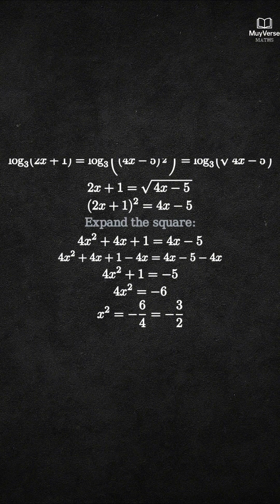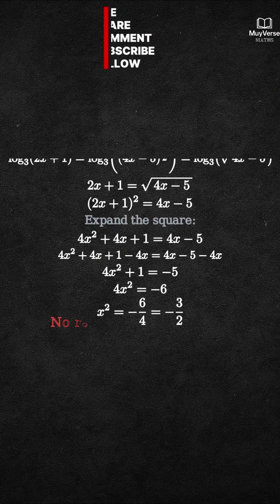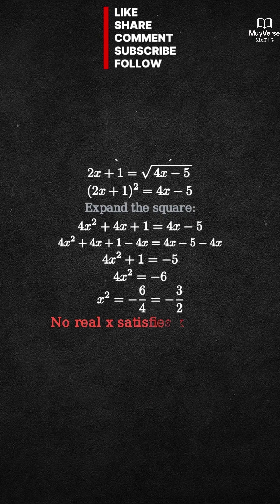Step 5: Interpret the result and check the domain. Since the square of any real number cannot be negative, x squared equals negative 3 halves has no real solution. But logarithms also require positive arguments. From the original equation,